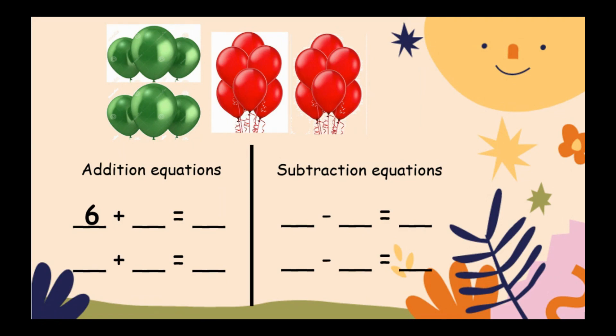Six green balloons plus twelve red balloons equals eighteen balloons in all. Or twelve red balloons plus six green balloons equals eighteen. How about subtraction equations? Eighteen balloons minus six green balloons—how many balloons left? Twelve red balloons. Or eighteen minus twelve equals six.